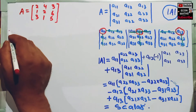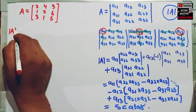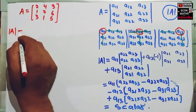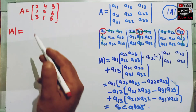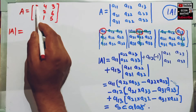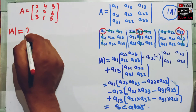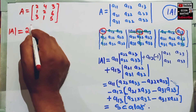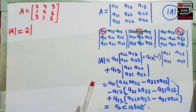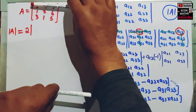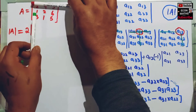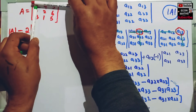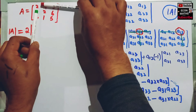We take the first element, that is 2, and mentally delete the row and the column. We multiply this 2 by the determinant of the remaining elements.